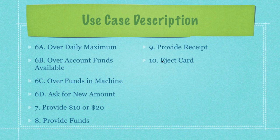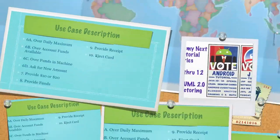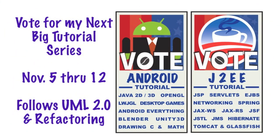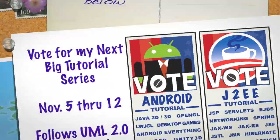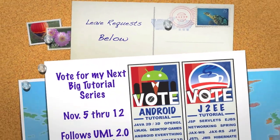That is a basic use case diagram as well as a basic use case description. As this tutorial continues, we're going to get more and more complicated, so feel free to leave any questions or things you'd like me to cover in the future. The next tutorial following my UML2 and refactoring tutorial will be either an Android games slash C programming language tutorial, or a Java Enterprise Edition tutorial with development frameworks. There's a link below the video where you can vote — voting is open for at least a week.